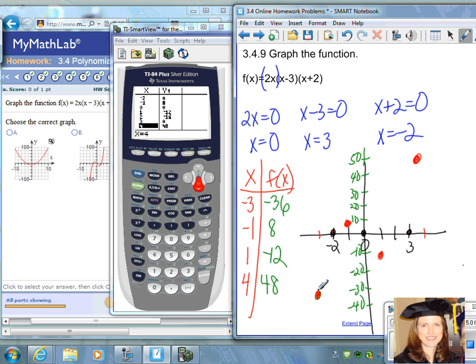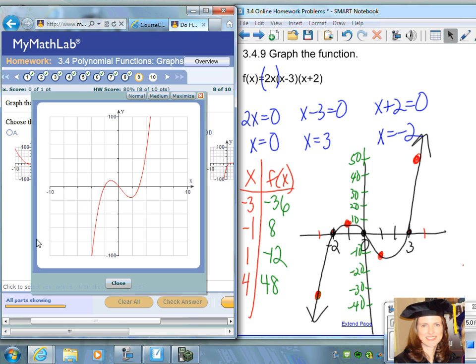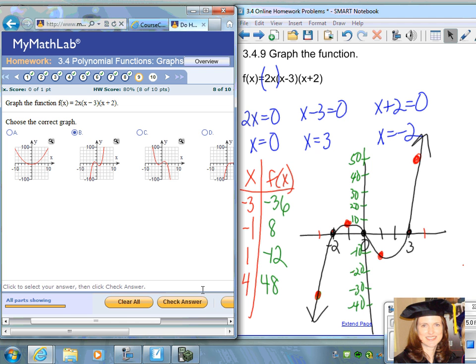Now you should have 1, 2, 3, 4, 5, 6 points on your graph. You can connect those points with a smooth curve. It's going to go up, down, and then up again. That's a pretty decent looking graph using the 3 x-intercepts and 4 additional points. Out of all the choices, it appears that choice B looks most like the graph that we have. We're going to choose B and check the answer.